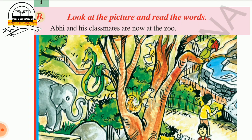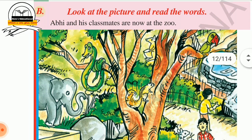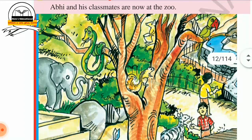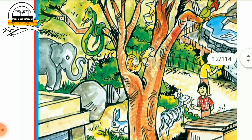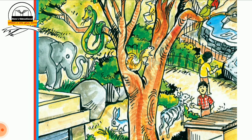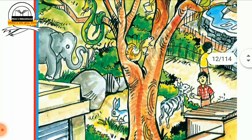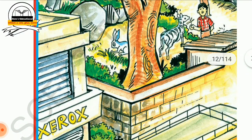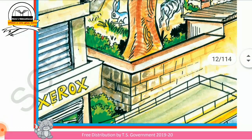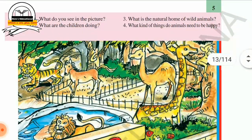The boy's name is Abhi and he went to the zoo with his classmates. He is in the zoo now, seeing the animals. There is a kangaroo, snake, elephant, squirrel, parrot, rabbit, and zebra. Some kids are giving grass and leaves to the animals. Next to the zebra, there is a rabbit, a xerox shop, a compound wall, and a bus is coming. Let us now see page number five.